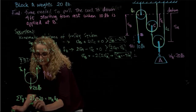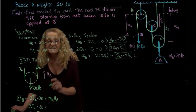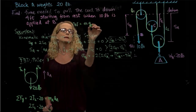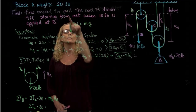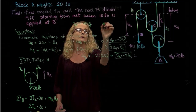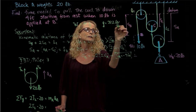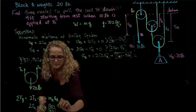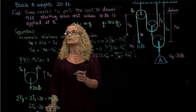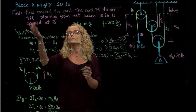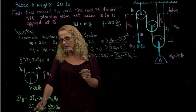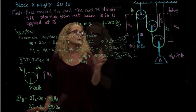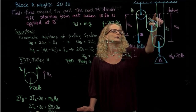Let me write that with the mass. We know 20 pounds is the weight, and weight equals mass times gravity. So to get the mass, we divide the weight by gravity. In American units, gravity is 32.2 feet per second squared. So we have 20 over 32.2 as our mass of A. To find time, we need to integrate the acceleration — but we still have T2 as an unknown. So to find T2, I'm going to do the free body diagram of pulley 2, which is pulley C.